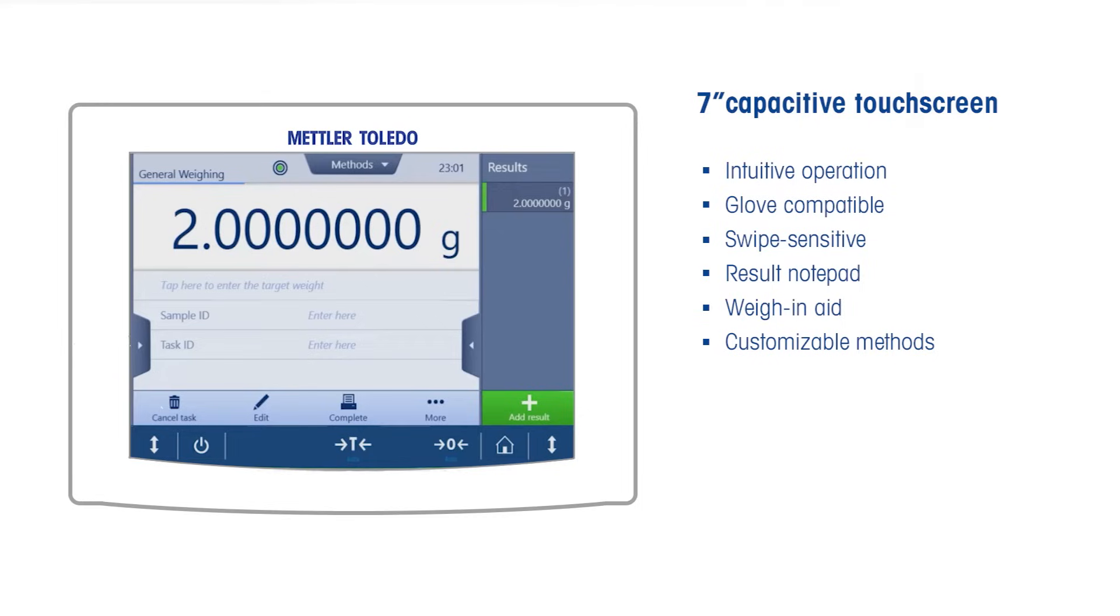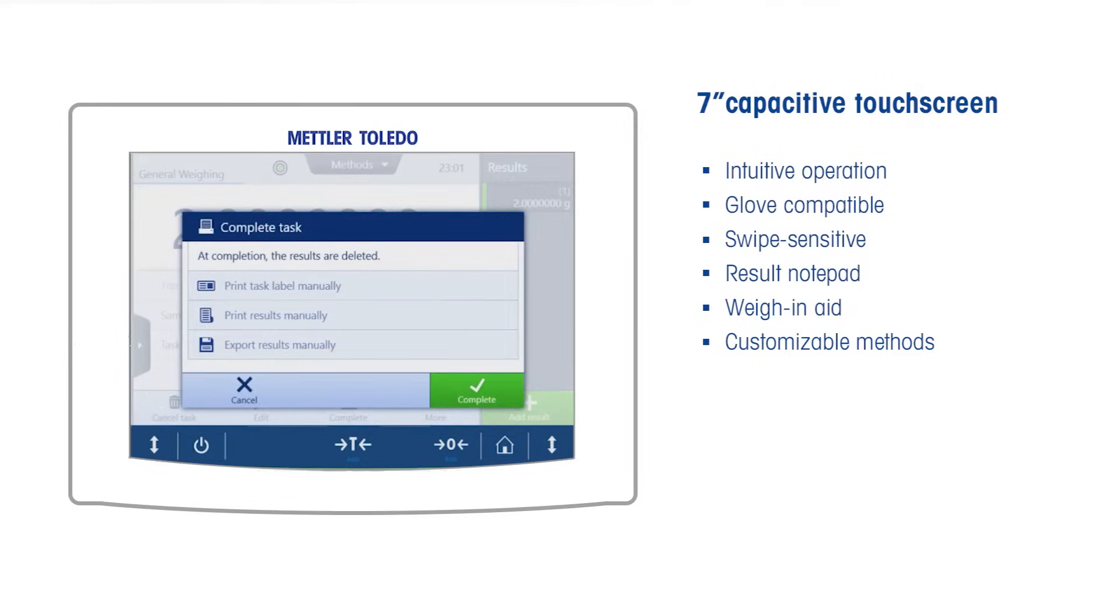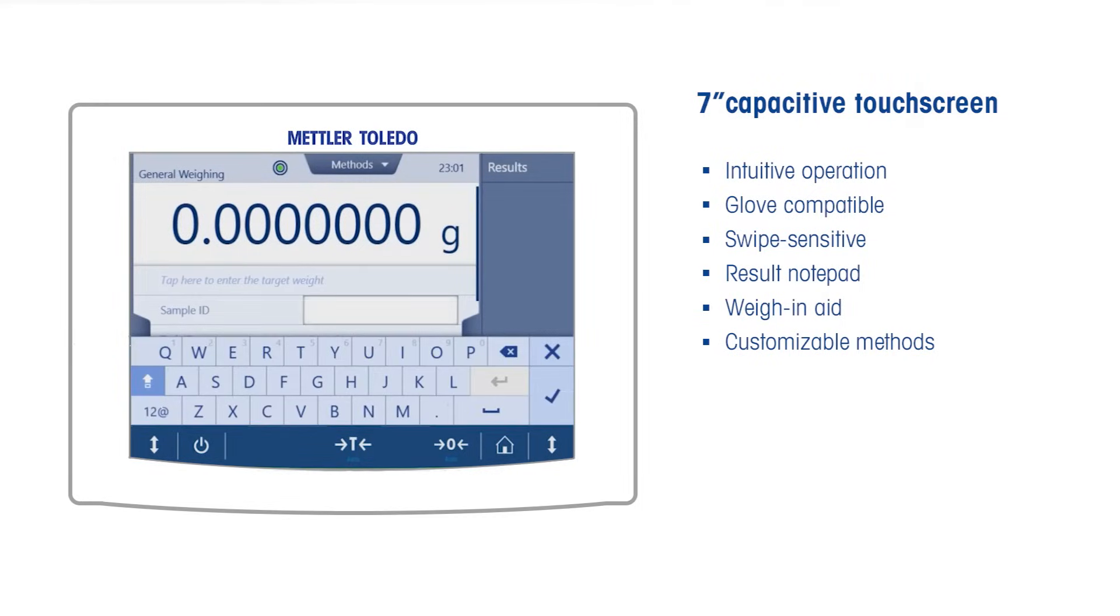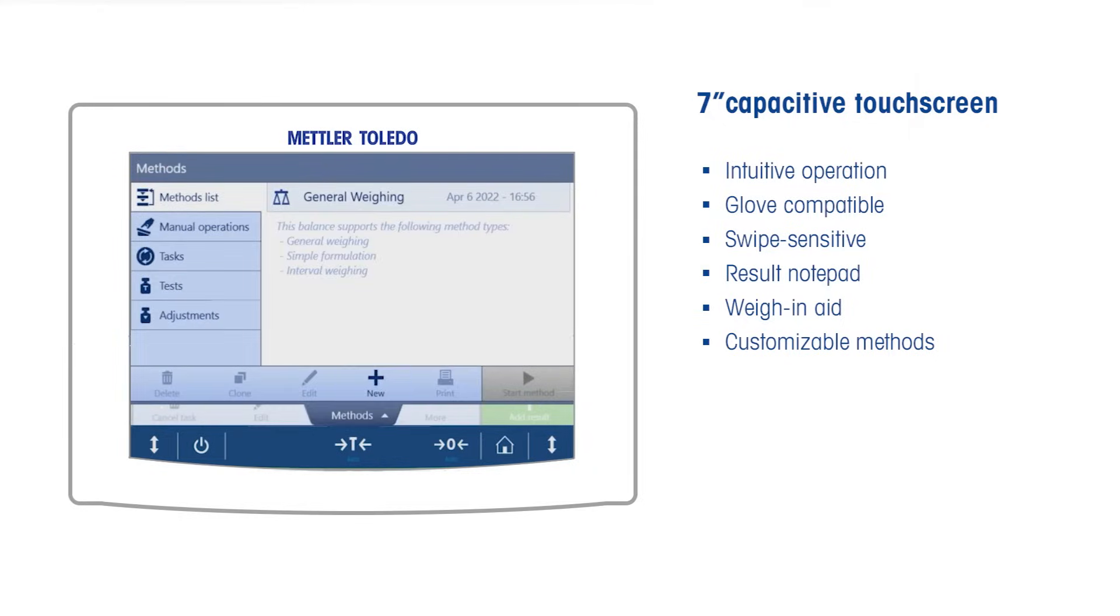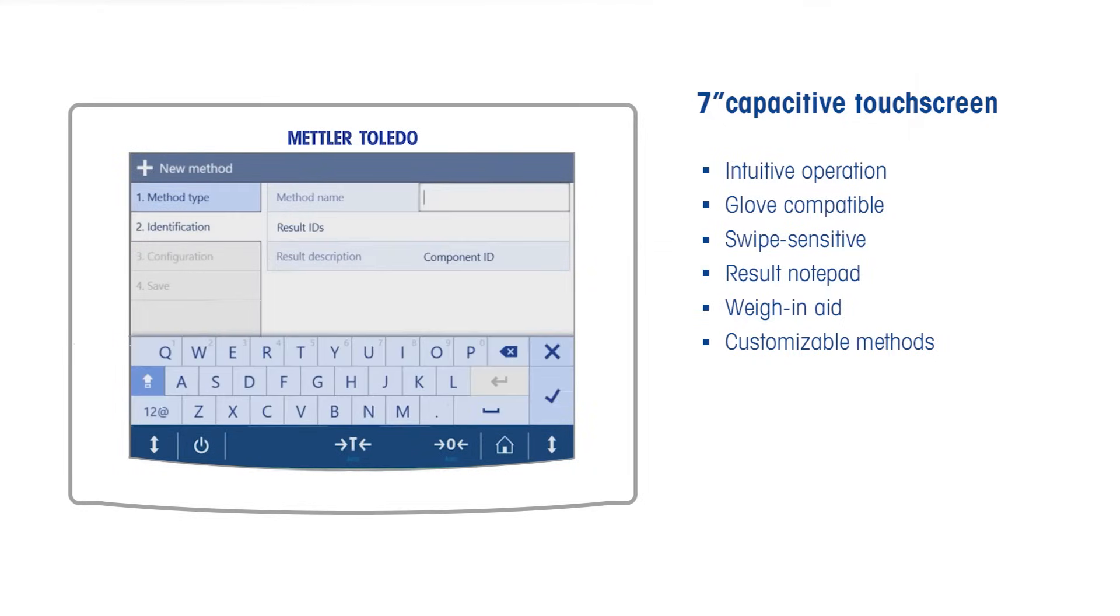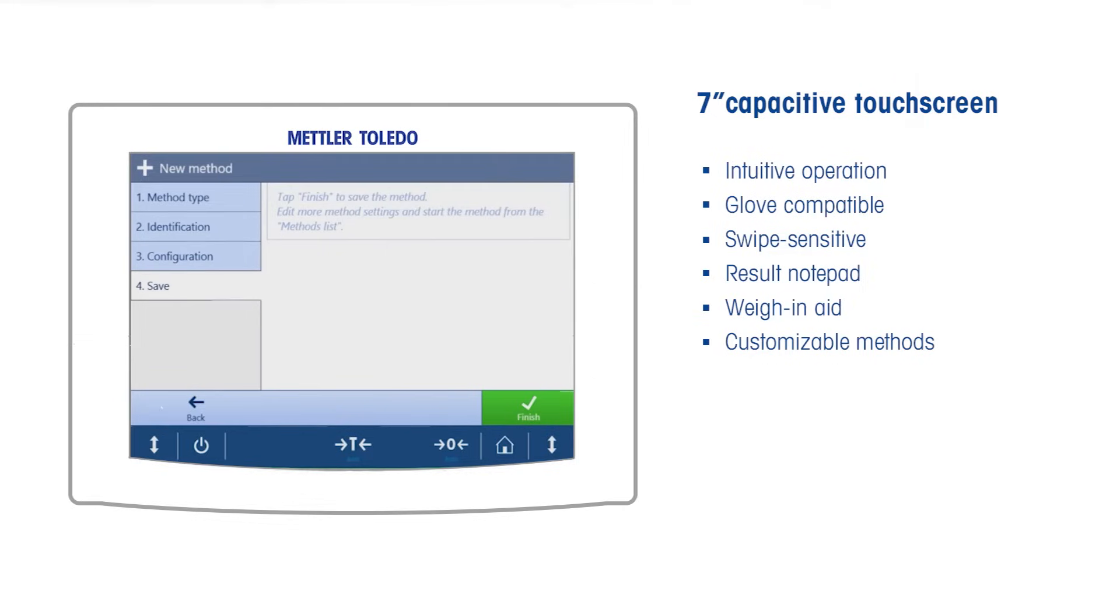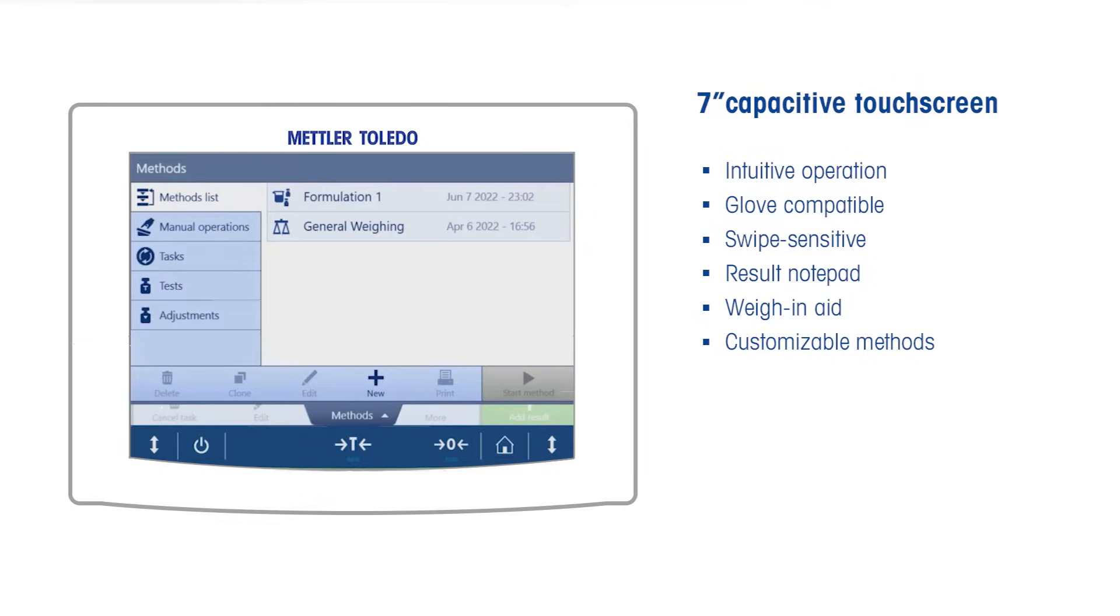The result list is always in sight and can be easily transferred to your lab journal. With one click, you can set a sample identification or activate a weighing aid that fits your tolerances. Process and balance settings for different weighing tasks can be saved as individual methods. This offers you a quick and simple way to start tasks and ensure users follow the same procedure. And whatever regulations you must comply with, we have your back.